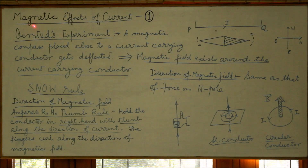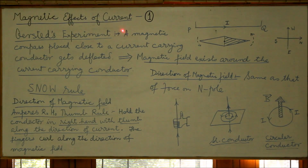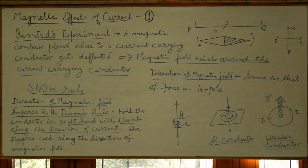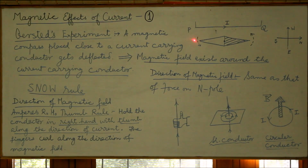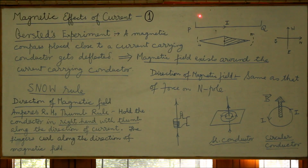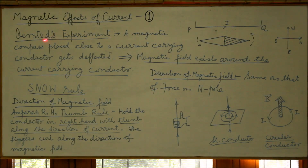In the present video titled 'Magnetic Effects of Current Part 1,' we will be dealing with the discovery of magnetic effect of current. The discovery is attributed to a simple experimental setup. The experiment was conducted by Oersted.